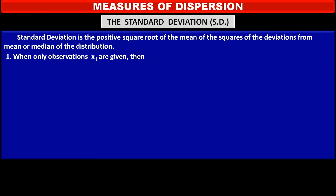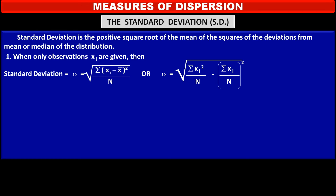When only observations xᵢ are given, then standard deviation sigma is equal to the square root of the summation of (xᵢ minus x̄)² upon n, or alternatively sigma equals the square root of (summation of xᵢ² upon n) minus (summation of xᵢ upon n)², which equals the square root of (summation of xᵢ² upon n) minus x̄², that is, mean square.